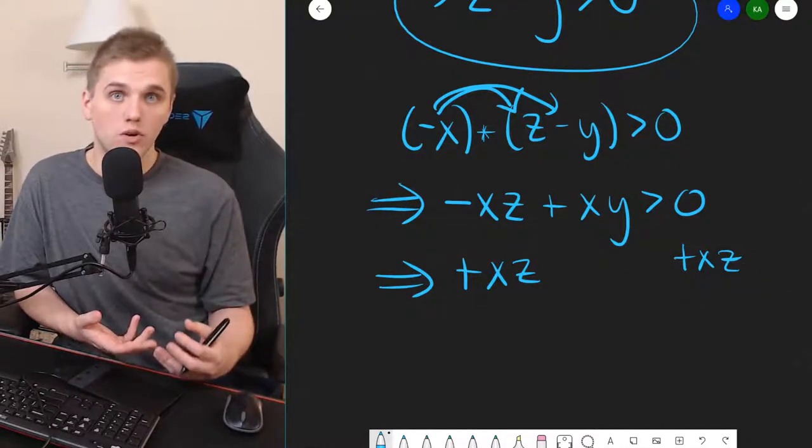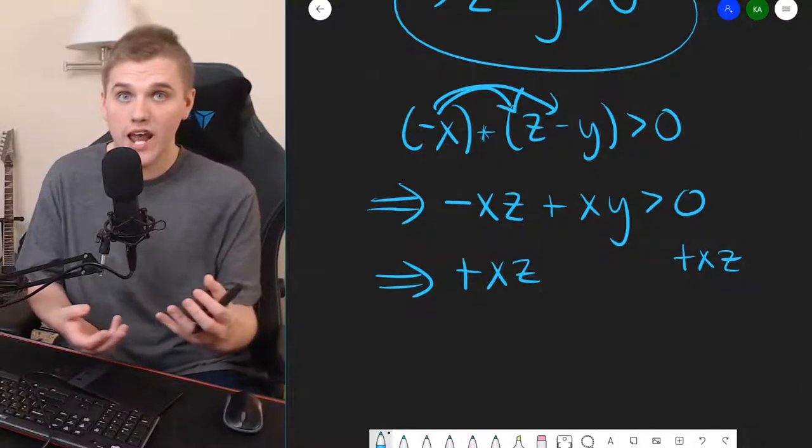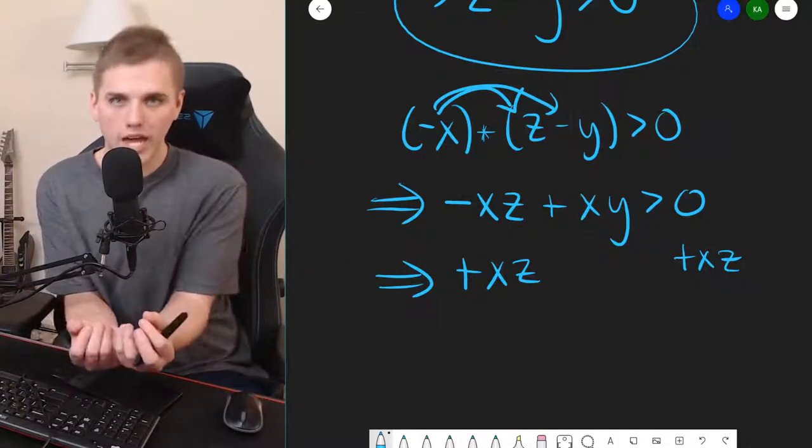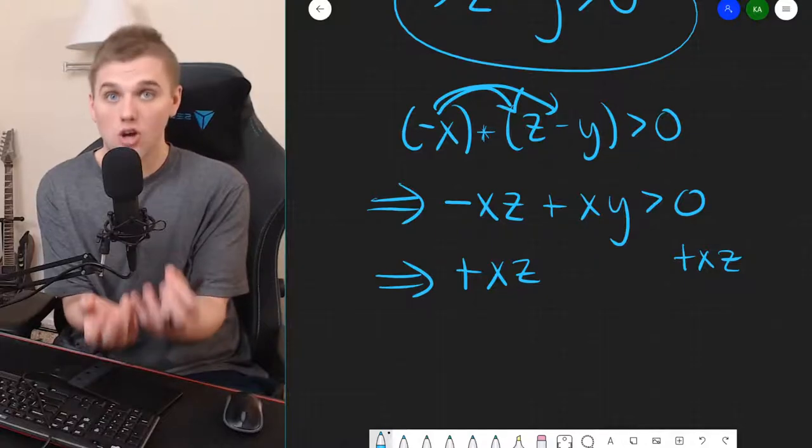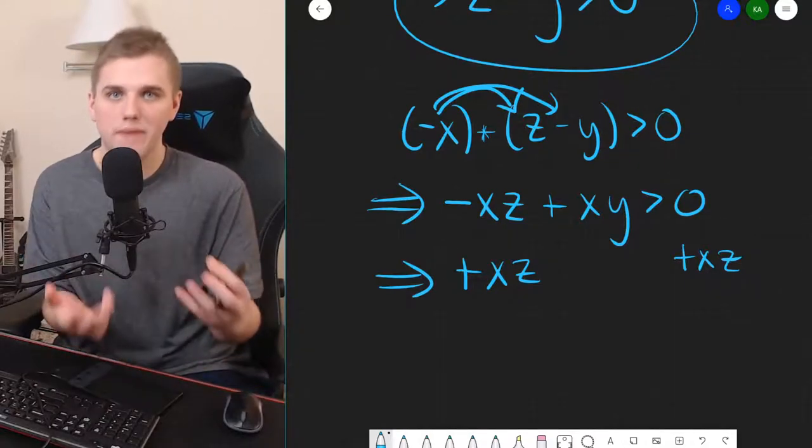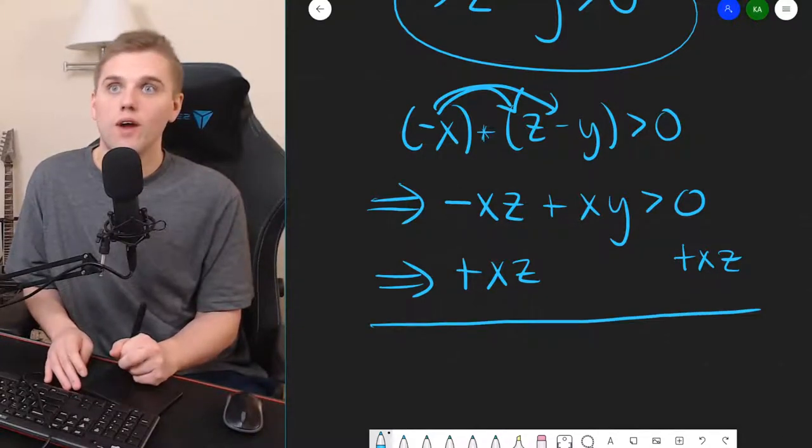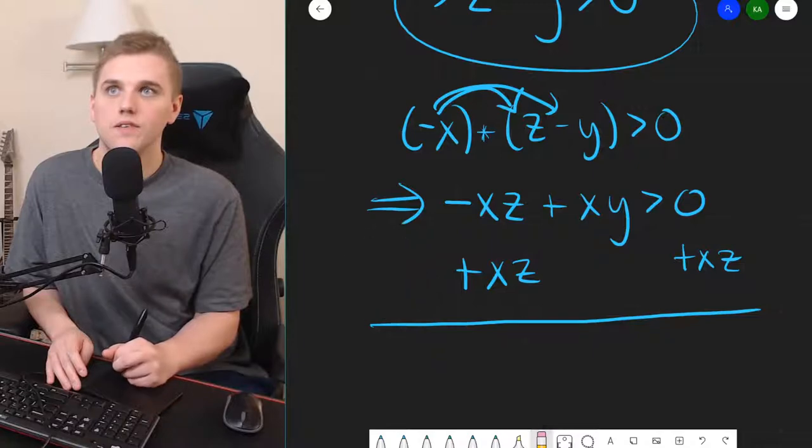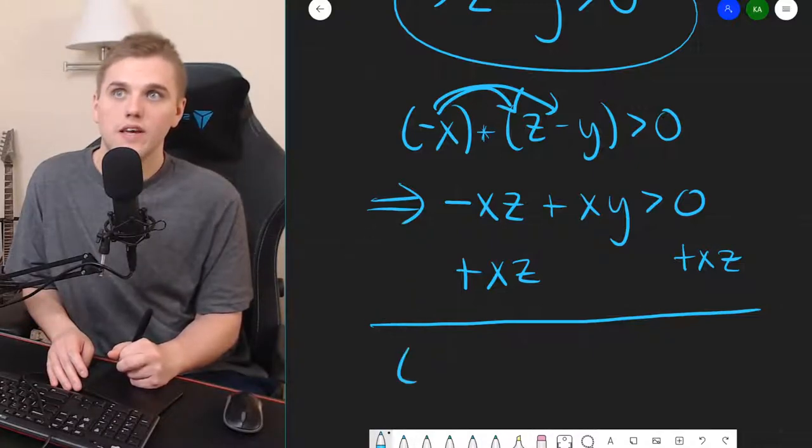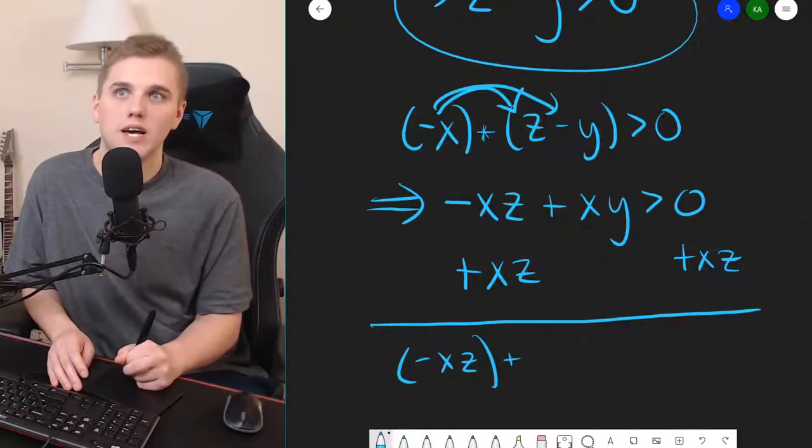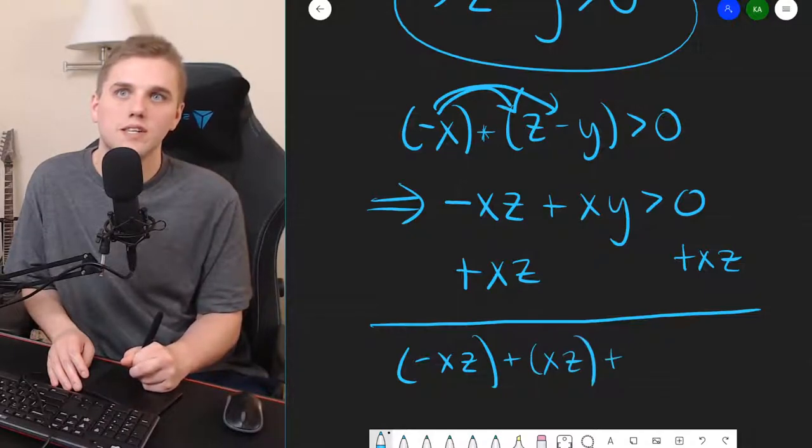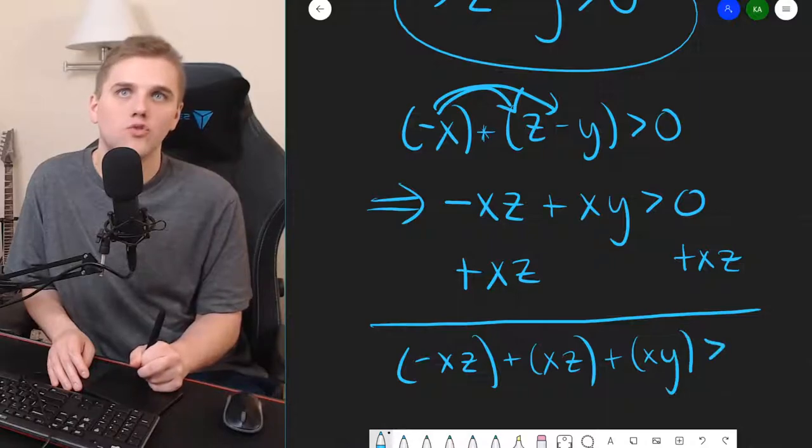Well, f is a field, which means that if you have an element x and an element z, then the multiplication of those two elements is also in your field f. That's what makes a field a field. So, we can rewrite this as negative xz plus xz plus xy is greater than xz.